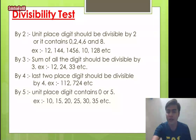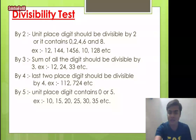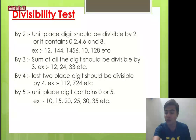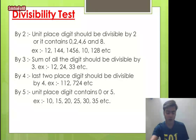To check divisibility by 4: the last two digits (the units and tens place) must be divisible by 4. For example, 112 — the last two digits are 12, which is divisible by 4, so 112 is divisible by 4. For 724 — the last two digits are 24, divisible by 4, so 724 is divisible by 4.